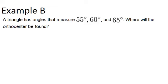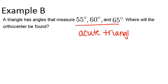So if these are the three angles of a triangle, it means that this is an acute triangle because all of the angles are acute. All of the angles are less than 90 degrees. And in any acute triangle, the orthocenter will be found inside the triangle. So that would be the correct answer here. The orthocenter must be inside the triangle because it's an acute triangle.